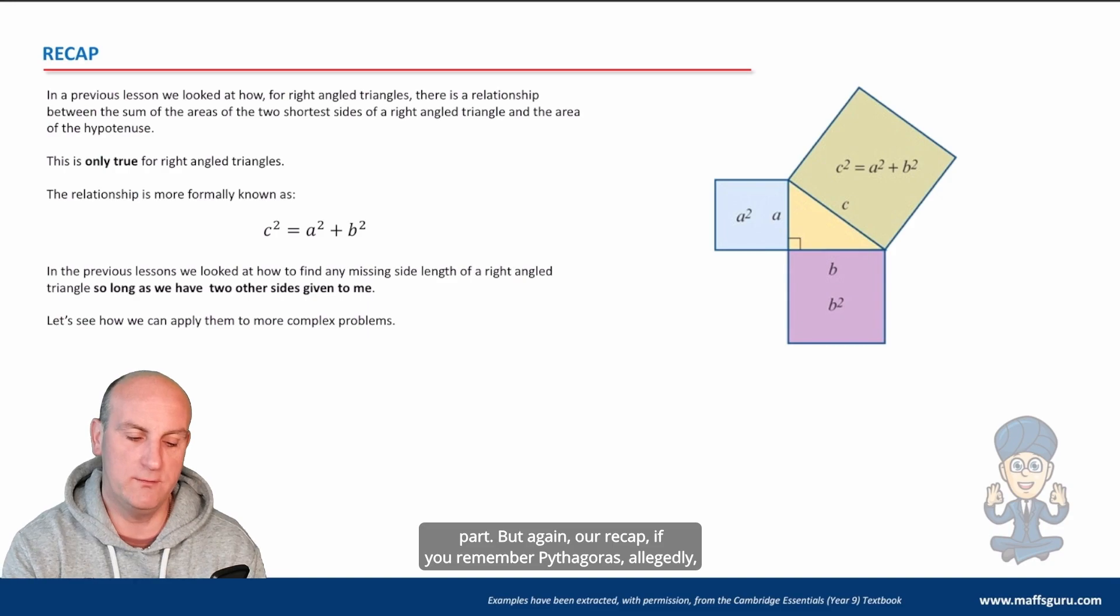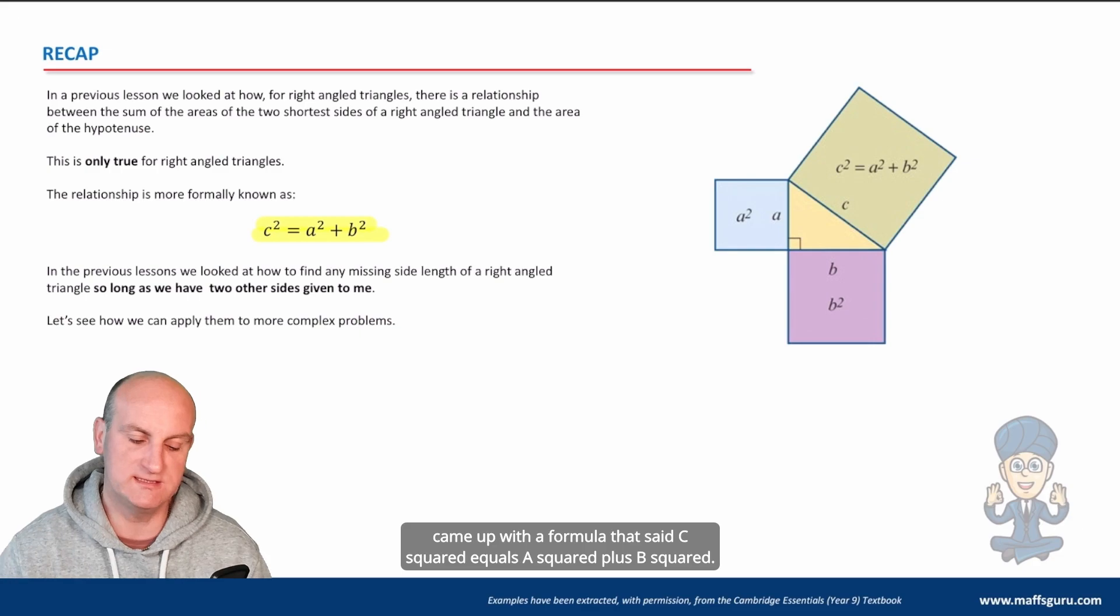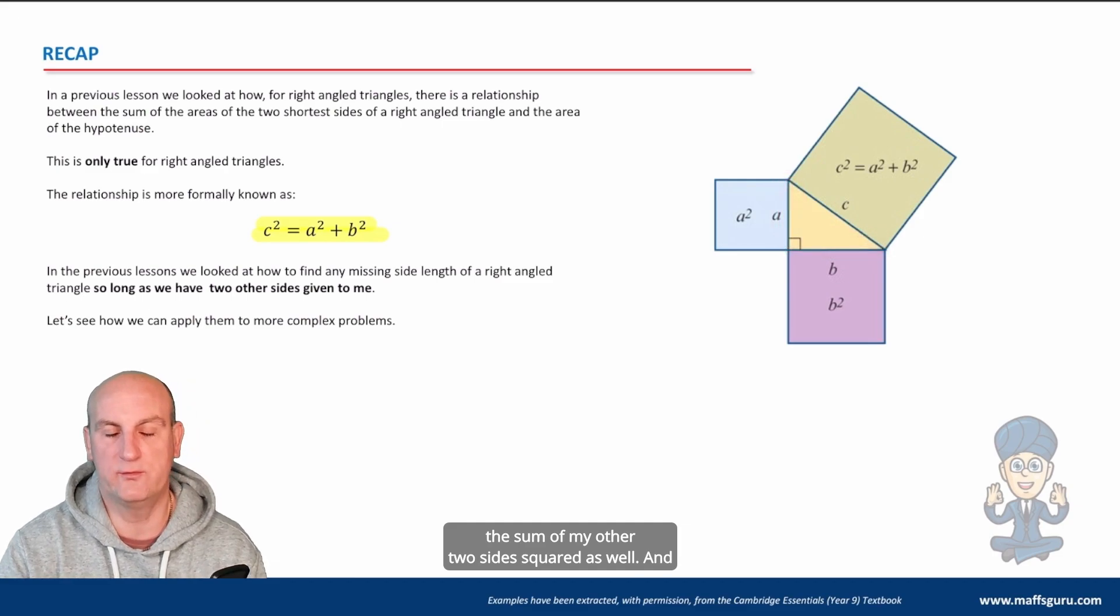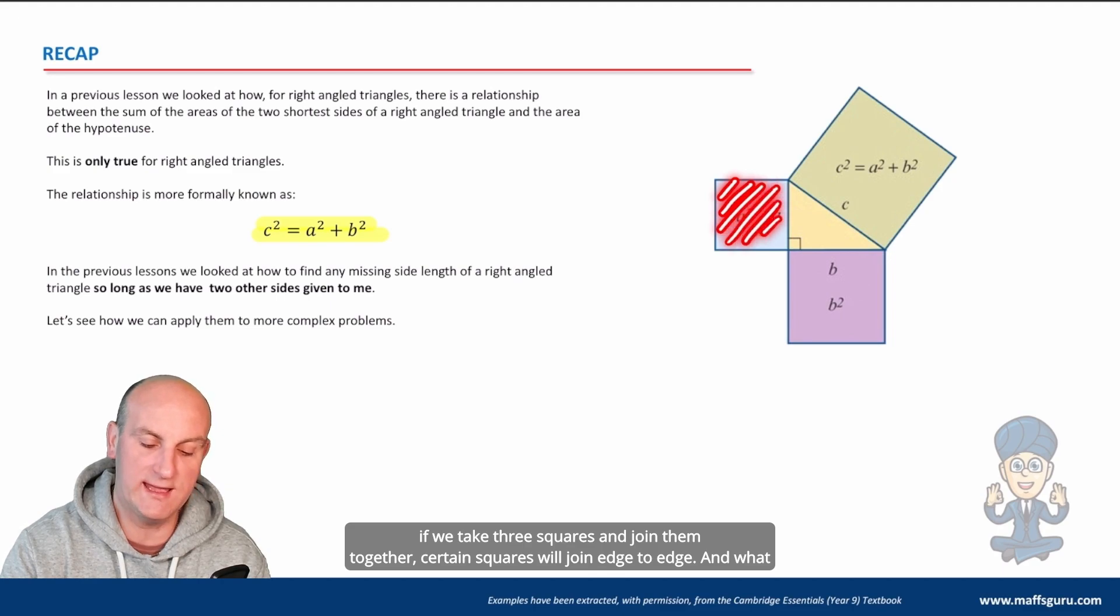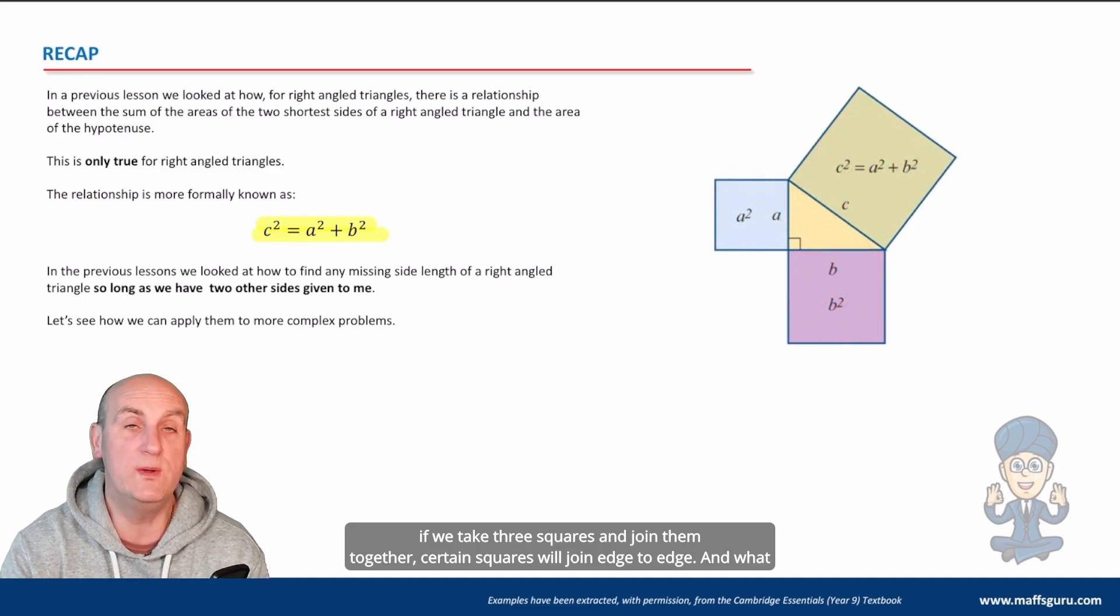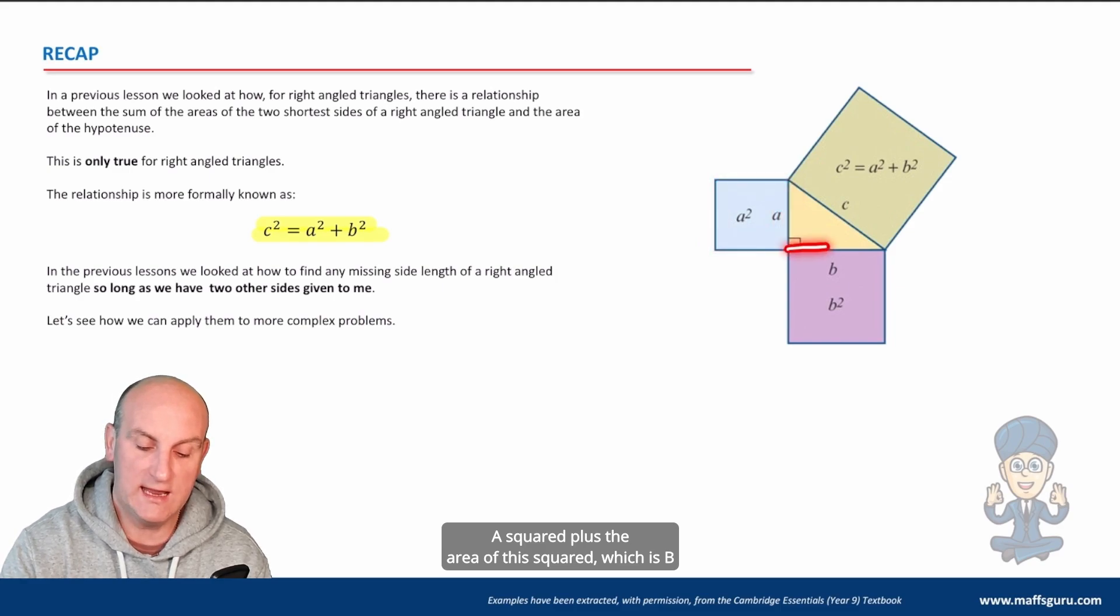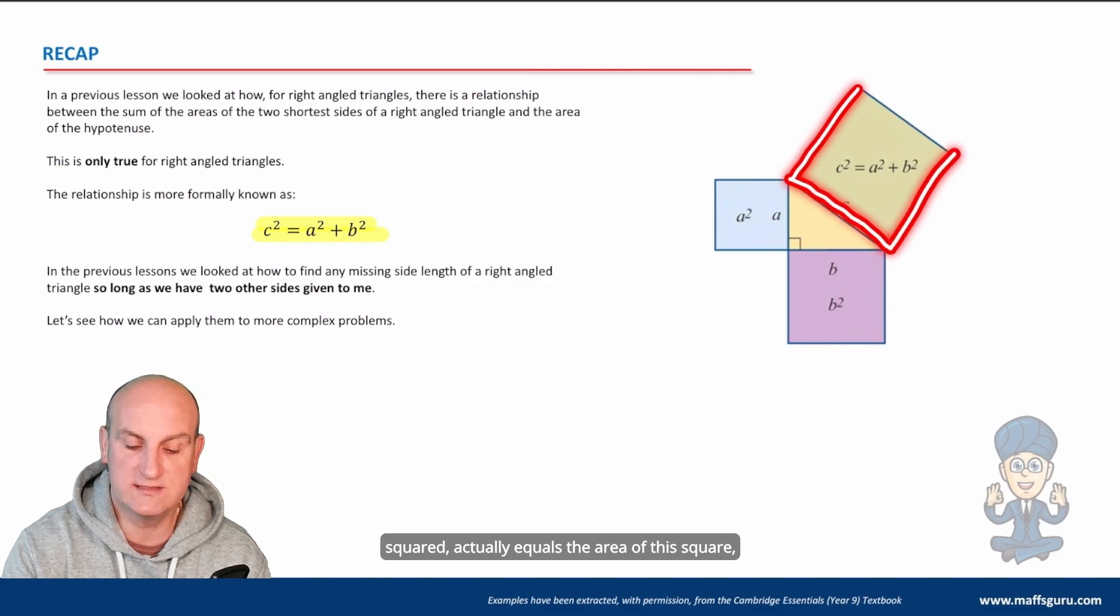Again our recap if you remember Pythagoras allegedly came up with a formula that said c squared equals a squared plus b squared. Well basically the hypotenuse length if I square it is equal to the sum of my other two sides squared as well. What happens is if we take three squares and join them together, the area of this square which is a squared plus the area of this square which is b squared actually equals the area of this square.